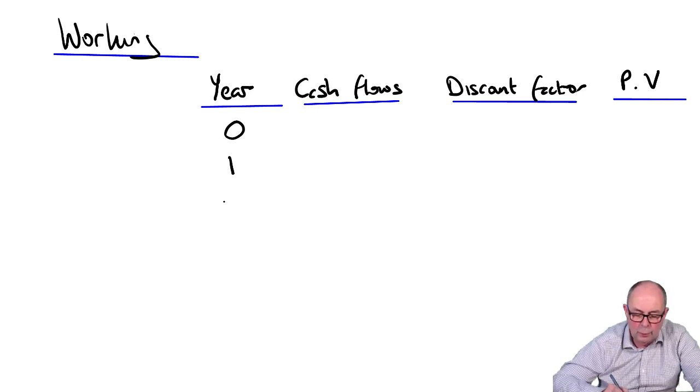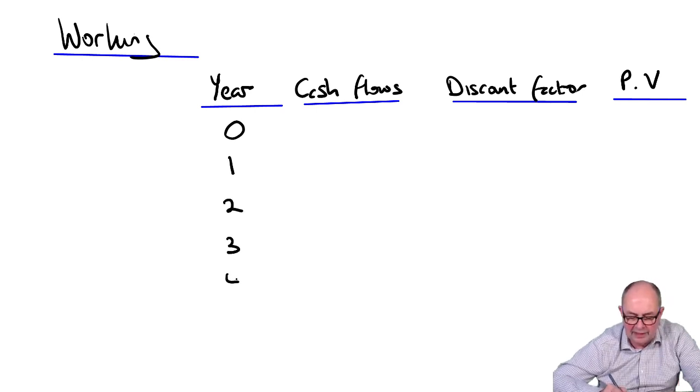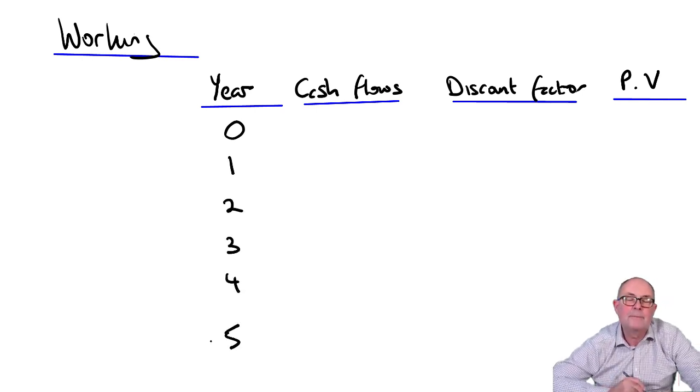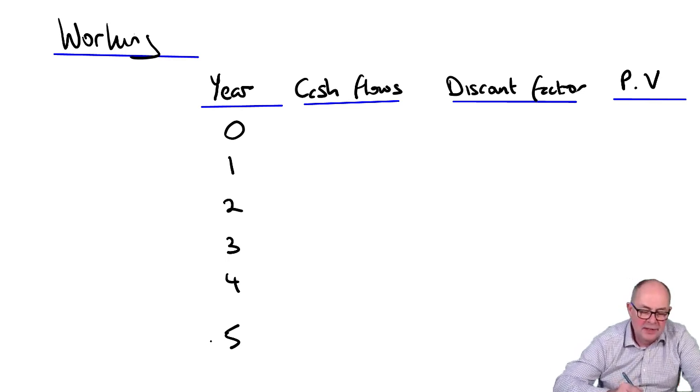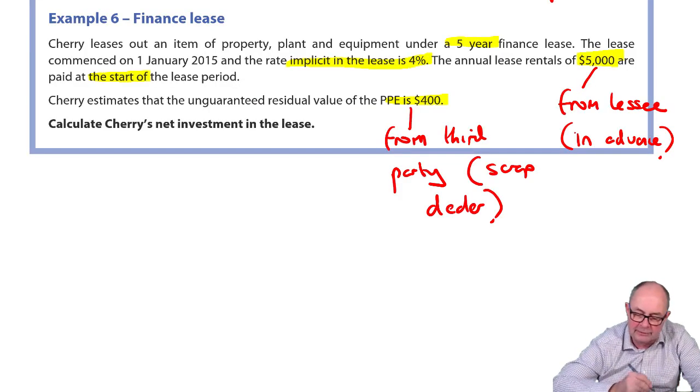I'll put numbers down the side for the years: 0, 1, 2, 3, 4, 5. The customer pays in advance. So, at time naught, the customer gives me their opening rental, which was 5,000.